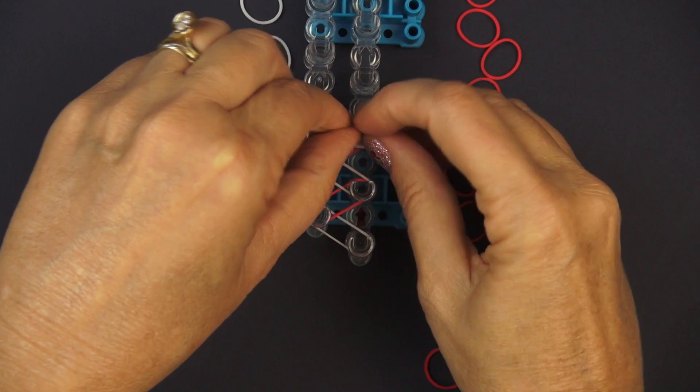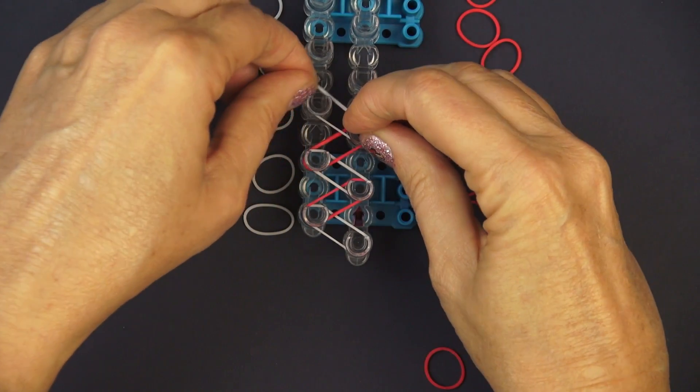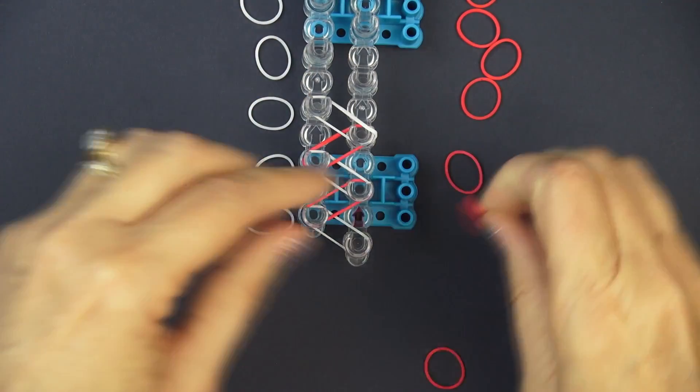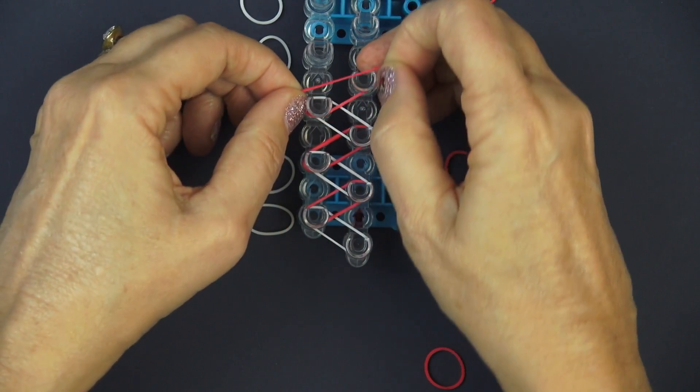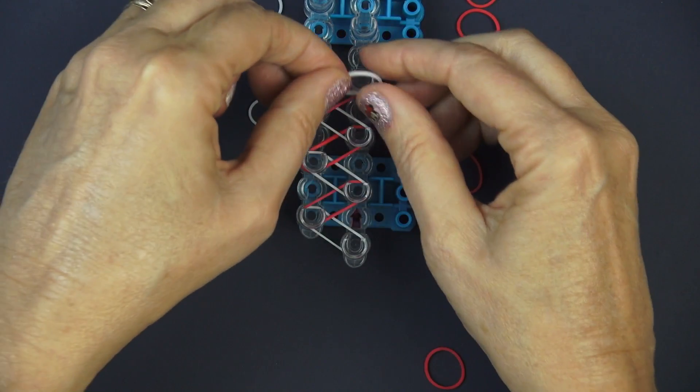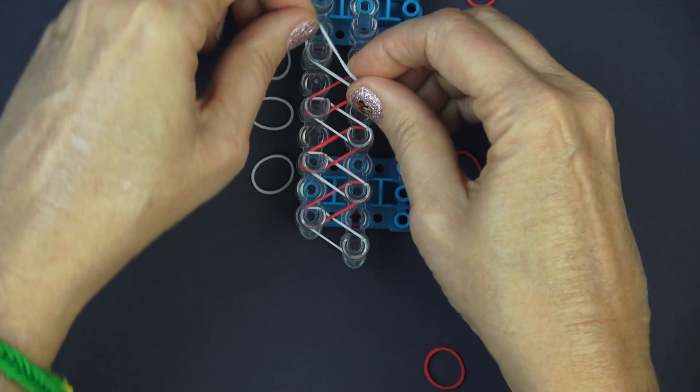I'm just going to keep alternating the rubber bands and I will be using every post on the loom to the very end of the loom.